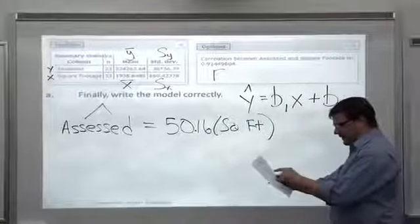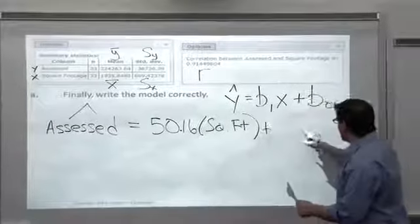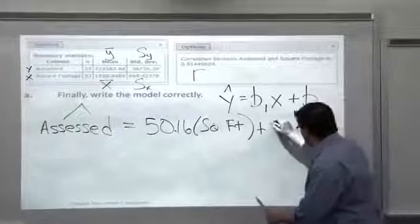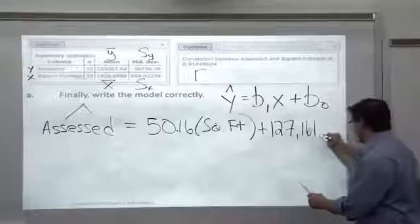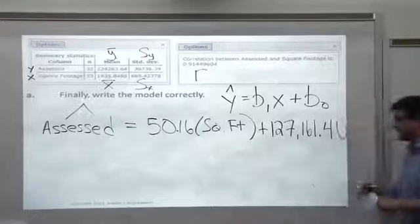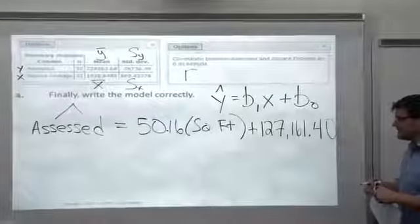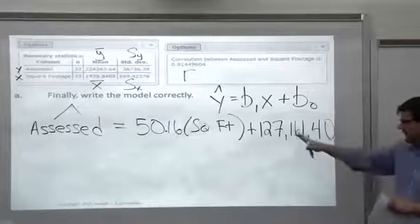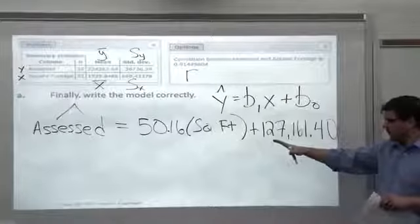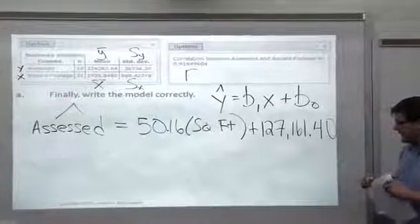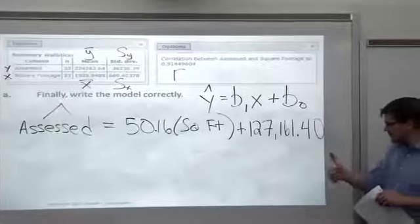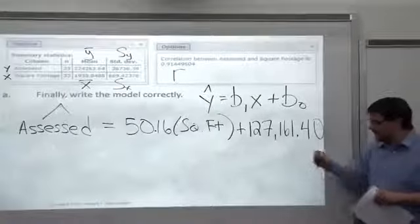Equals the slope. This is the 50.16 that we calculated two slides ago. Times X. Don't write X, write the variable name. Times square footage. I'll just abbreviate that. And then we're going to do what? Plus or minus. It was a plus. Here's the Y intercept B sub 0, and this was 127,161 and 40 cents. So there's our equation. We use the variable names, which is important. It helps us remember what we're talking about.